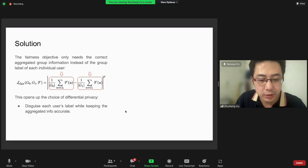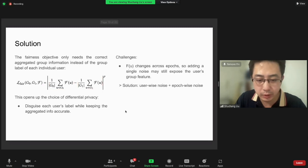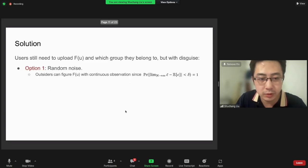One challenge in this part is that we only have one group feature per user, so using a single perturbation still exposes users' ground truth information. In detail, if you consider adding random perturbation, it will gradually reveal the true information of users over time because one can estimate the average of the uploaded values over epochs. The inference confidence grows as the number of communication runs increases—typical large number theory.